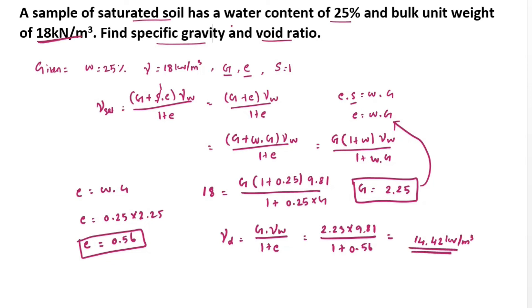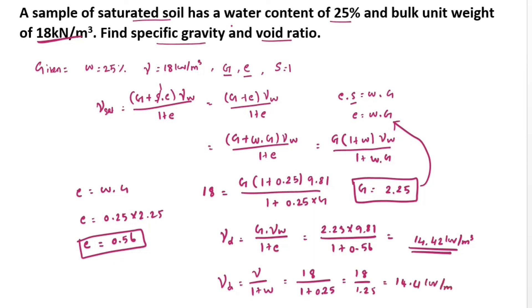There is another formula for dry density: gamma D equals gamma divided by 1 plus W. Substituting gamma equals 18 and W equals 0.25: gamma D equals 18 divided by 1.25, which also gives 14.4 kN per meter cube — confirming our answer. This is the method to solve soil mechanics problems. We will see more in the next video. Thank you.